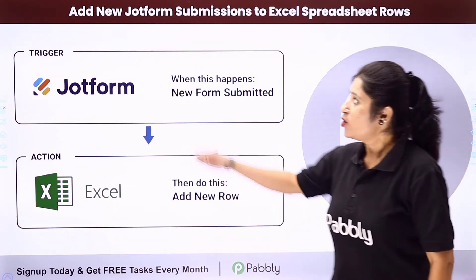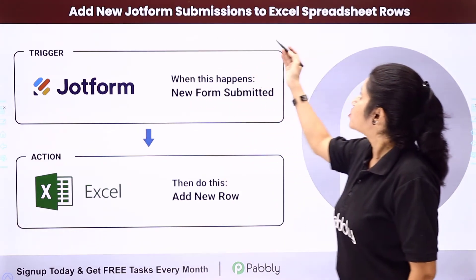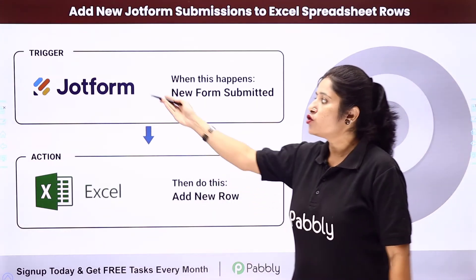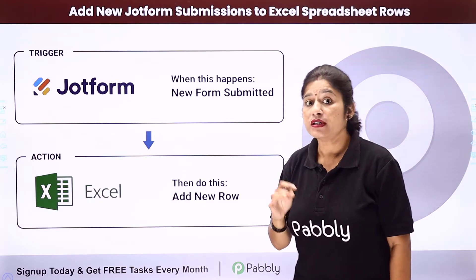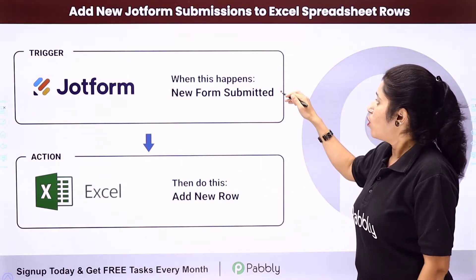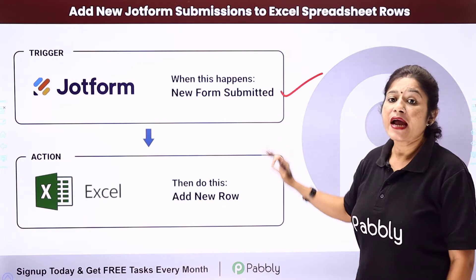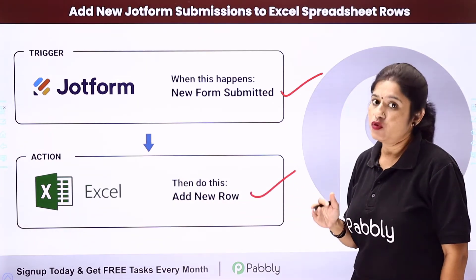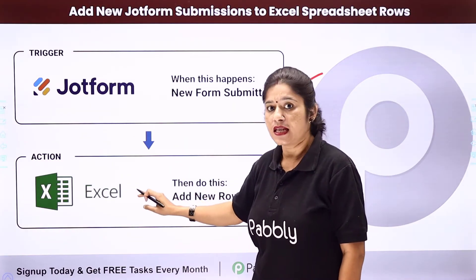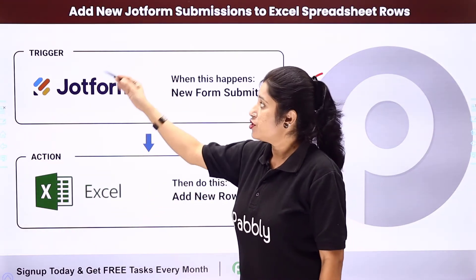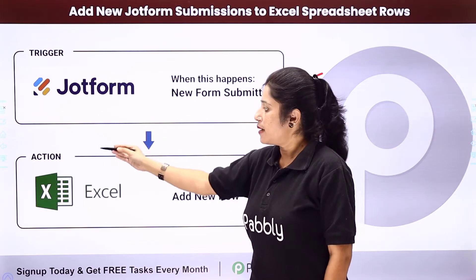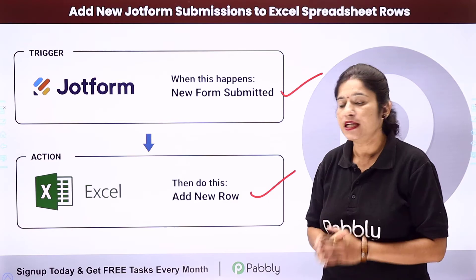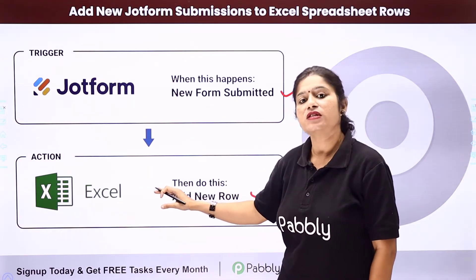In this video we are going to learn how you can add new JotForm submissions to an Excel spreadsheet row. The idea is that you have created a form using your JotForm account, and whenever the form is submitted, the details should automatically be added to your Excel spreadsheet as a new row. For that, you need to integrate your JotForm account with Microsoft Excel using Pabbly Connect, where JotForm is the trigger application and MS Excel is the action application.